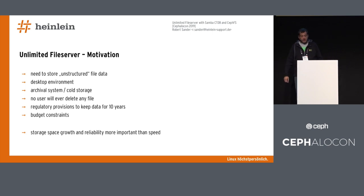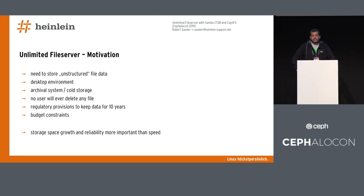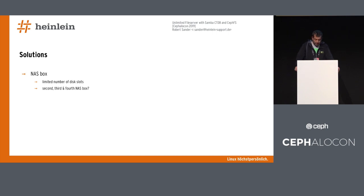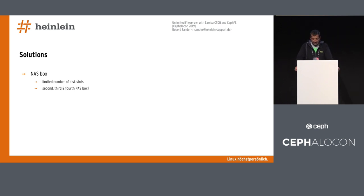We have two factors — storage space growth and reliability — that are more important than speed here. This is a good playing field for Ceph and Samba, both open source technologies ready to use. There may be other solutions that come to mind, for example NAS boxes — hardware you can buy from different vendors where you just put disks in and they provide a file share. These boxes are limited to four or eight disks maybe.